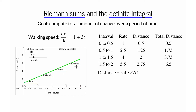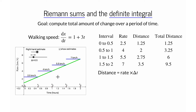You also insist we try the right-handed estimate, approximating the rates in the four intervals by your final walking speed in each interval — that is, we use the rates two and a half, four, five and a half, and seven. Multiplying those numbers by one-half and summing gives an estimate of nine and a half kilometers. With four intervals, our left-handed estimate of six and a half and right-handed estimate of nine and a half are closer together, but still not too close.